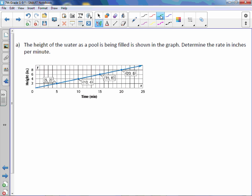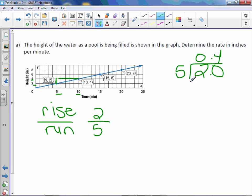We would find our rise over our run. The rise goes from 2 to 4, so the rise is 2. The run goes from 5 to 10, so the run is 5. Divide those out.